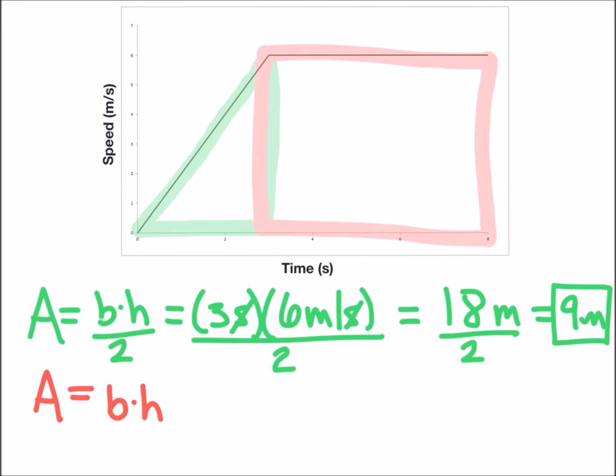For the area of the rectangle, if we look at the base we're starting at time equals three seconds and we're increasing until time equals eight seconds, so the base is going to be eight seconds subtract three seconds, the difference of five. And the height is going to increase from zero to six meters per second.